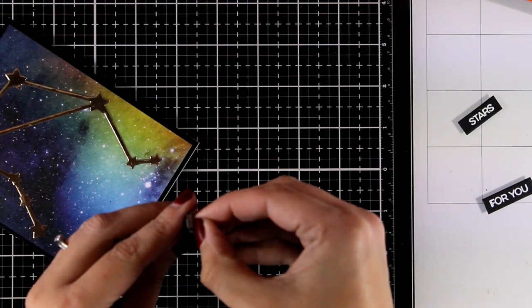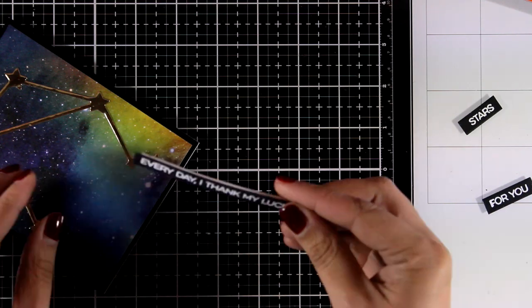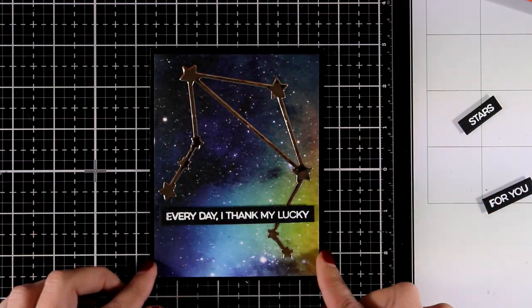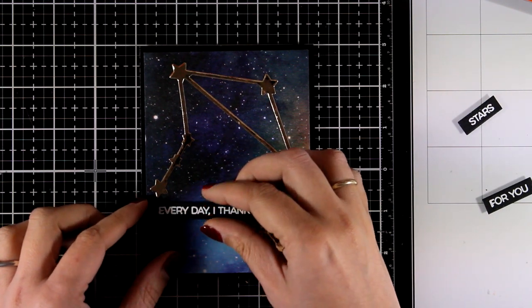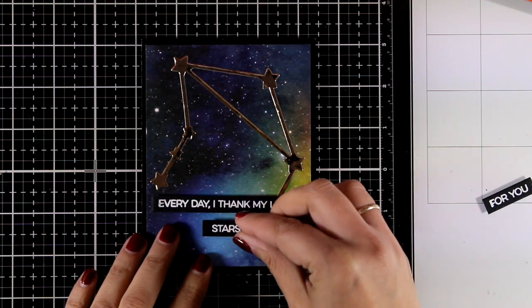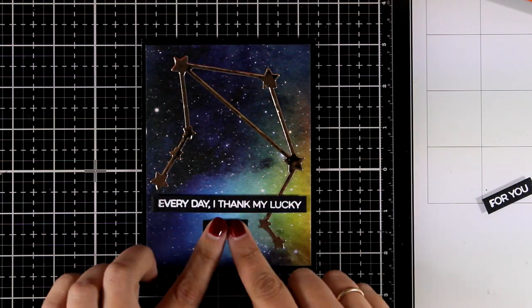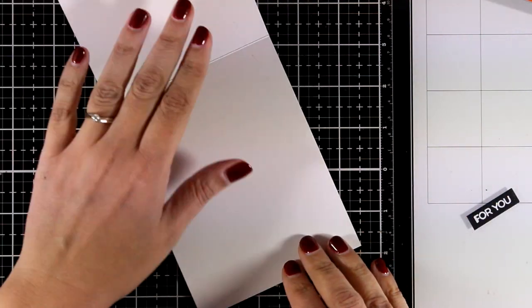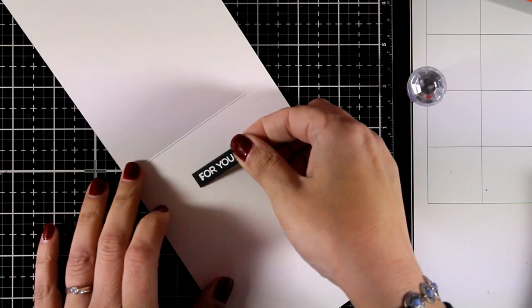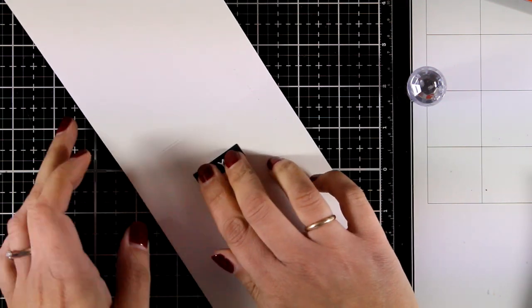I'm also going to stick down all those little strips with the sentiment and I did use foam tape at the back as well. Now I'm not going to stick everything in front of the card. I will go with every day I thank my lucky stars, and on the inside I'm going to stick for you. I usually don't do anything on the inside of my cards so I have plenty of space to write my message, and that completes the card for today.